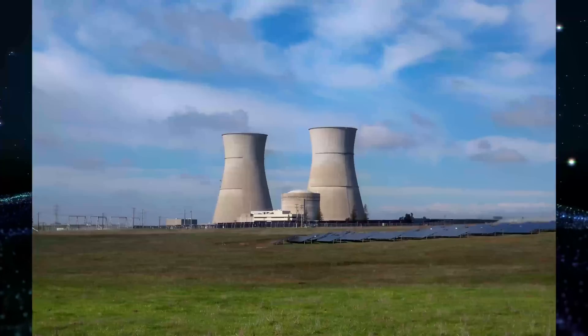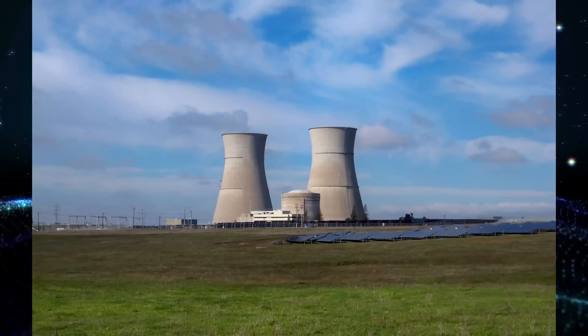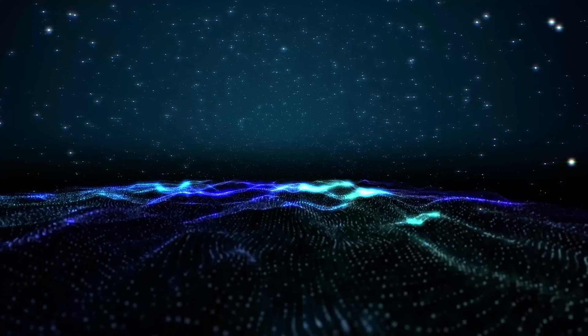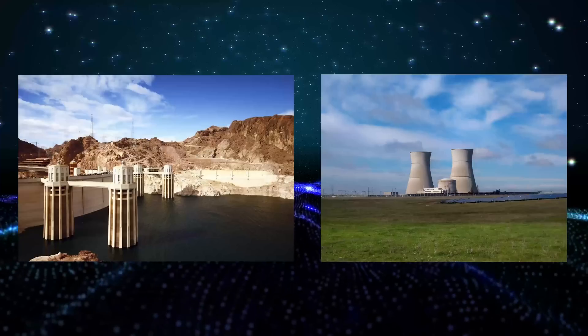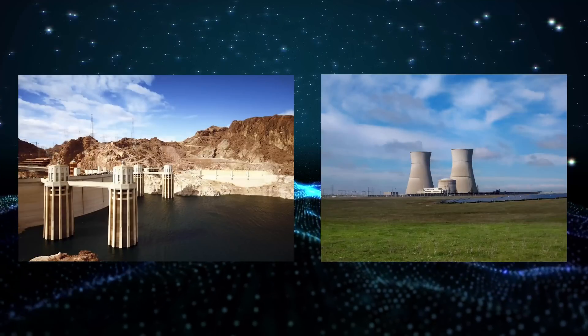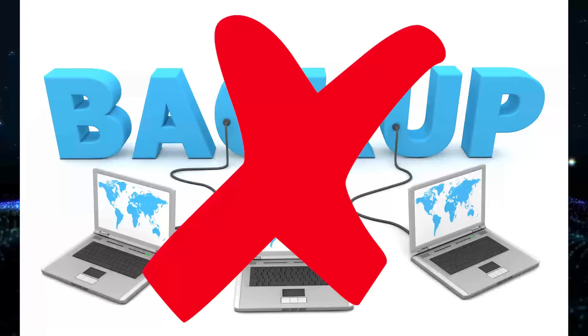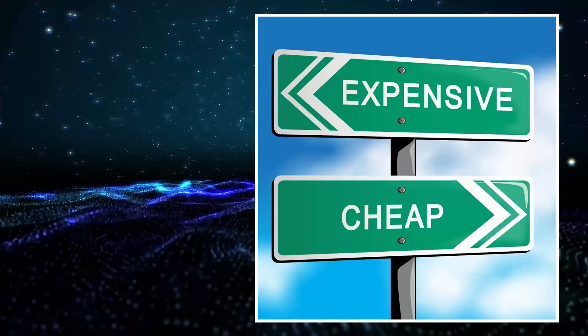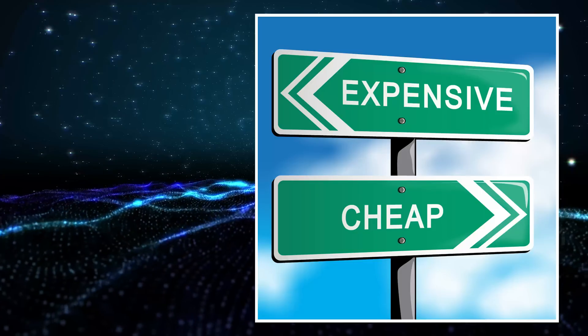Hydroelectricity and nuclear must be doing something right in order to comprise so much of the total energy produced by renewables. As a matter of fact, they are. What these two energy sources have in common is their consistent outputs. They don't require backup energy. Both of them are also quite cheap. Hydroelectricity is more widely used because it's cheaper.